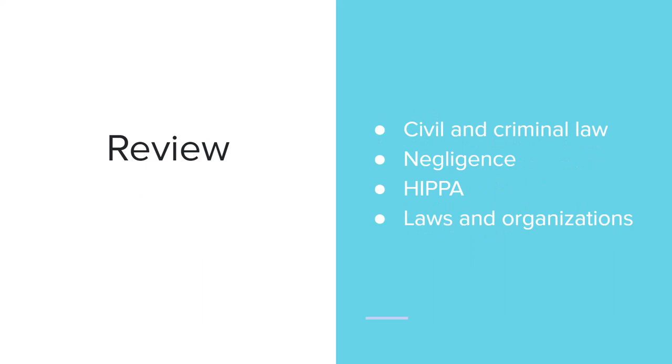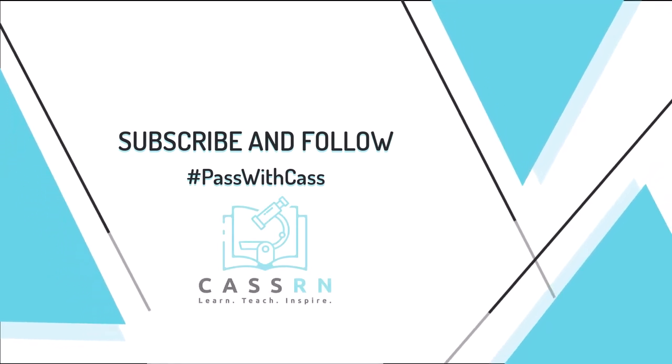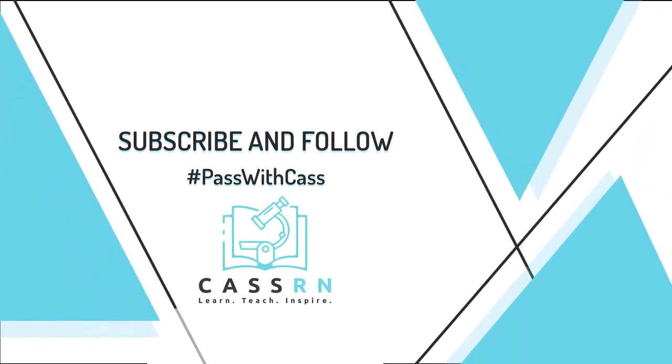Quick review: civil and criminal law differ in that criminal involves injury to the public — prosecution — while civil involves injury to a private party — the plaintiff. Negligence is when you unintentionally cause harm by doing or not doing something, and malpractice is when you intentionally cause harm. HIPAA is the privacy law — make sure you follow it, as it's easily broken accidentally. Be aware of the various laws and organizations that govern nursing so you can protect yourself from accusations of negligence or malpractice. Thanks for tuning in — please help grow the channel by clicking subscribe and follow below.